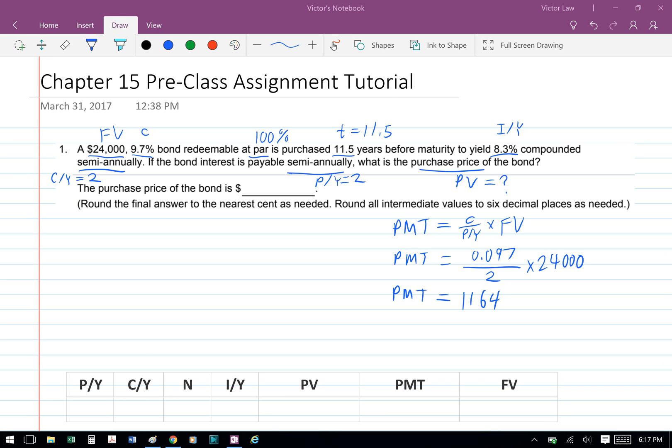The first number that we see here is $24,000, that's the future value. And then 9.7% is your coupon rate, 11.5 is your T, 8.3 is your I/Y nominal interest rate. Compounded semi-annually, so we know C/Y equals 2. And then payable semi-annually, so P/Y equals 2. And then we're solving for present value.